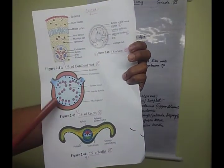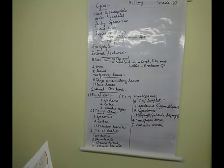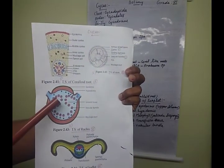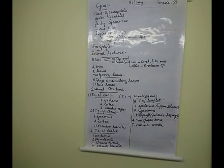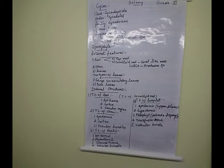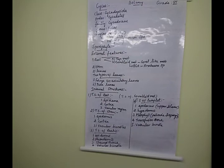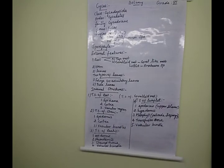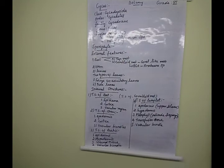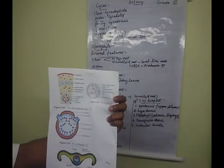Other characteristic features of the vascular bundle: it is collateral, endarch, and open type — already taught. The rachis region also has the same type of vascular bundle. There is also a diploxylic condition of the vascular bundle present, with centripetal and centrifugal xylem — centripetal means base to apex, centrifugal means centre to periphery. This is the diploxylic condition of the vascular bundle.